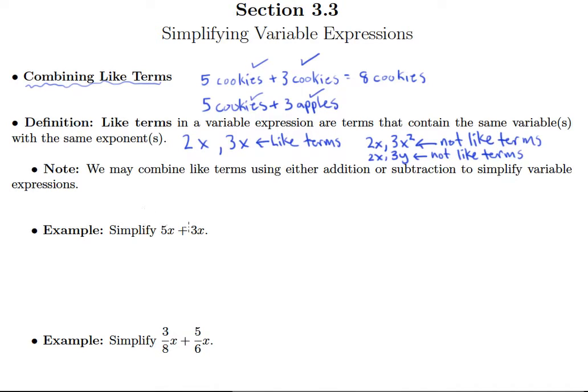Now for these first couple of problems, it's real simple. You can see we have like terms, and so we want to combine them. And the way we combine them is by using either addition or subtraction, and we just add or subtract the coefficients on those like terms.